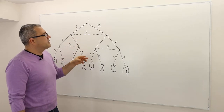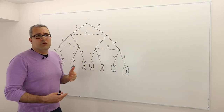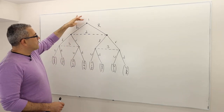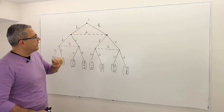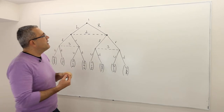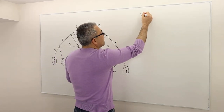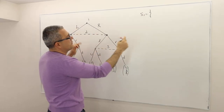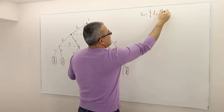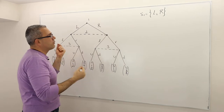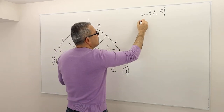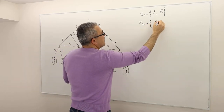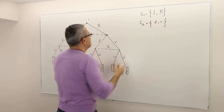There are three players, and you need to find the normal form representation of this game. Player one has two strategies: capital L and capital R — left and right. Player two also has two strategies: small l and small r — left and right.